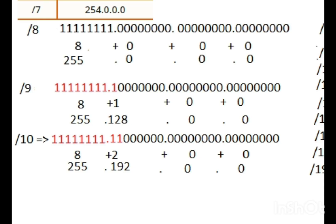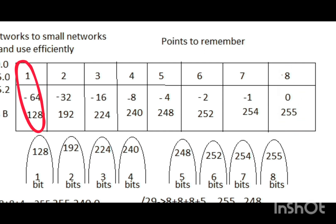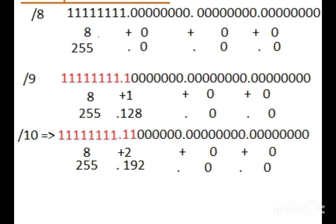Slash 9 is 8 plus 1. The first octet has 8 bits of 1s giving 255, and the second octet has only 1 bit giving 128. So the subnet mask value of slash 9 is 255.128.0.0.